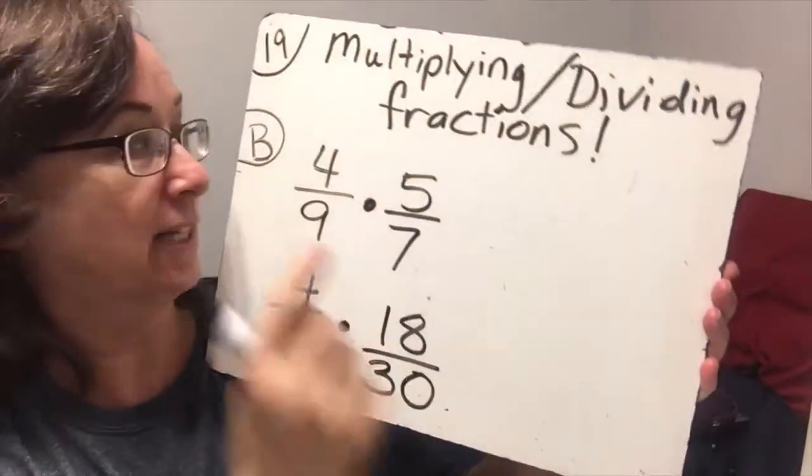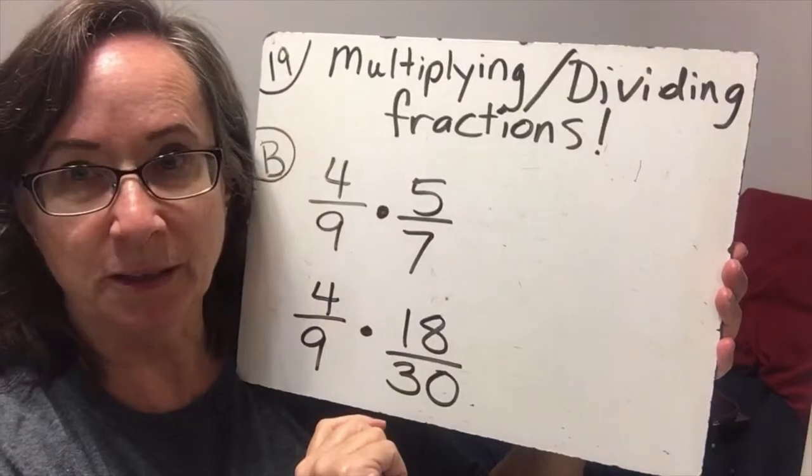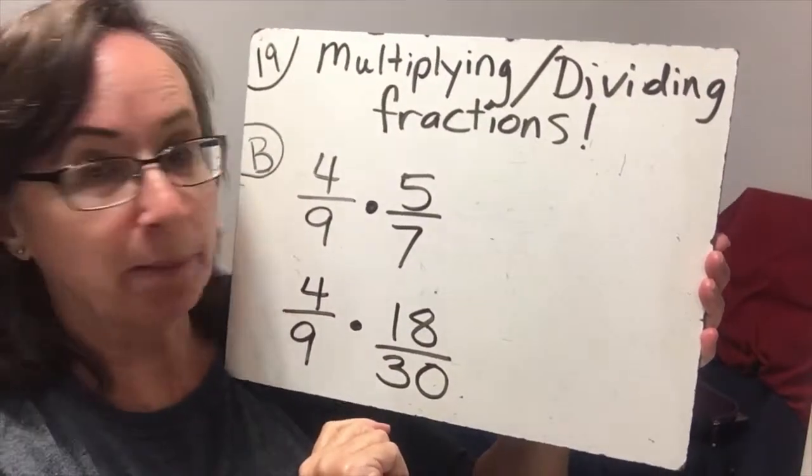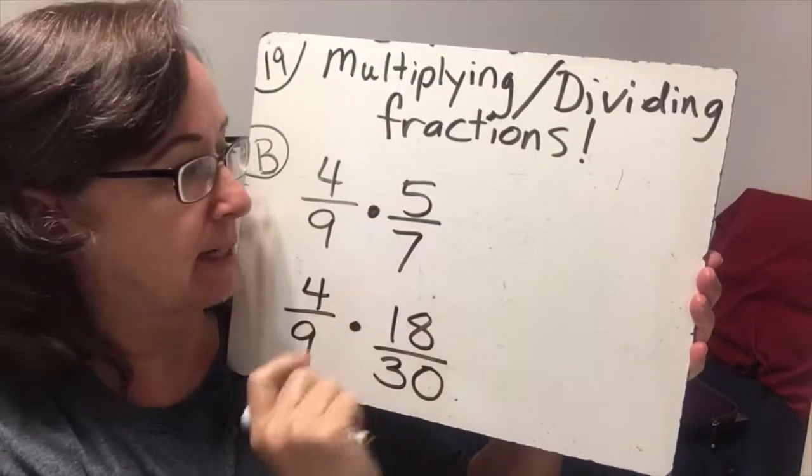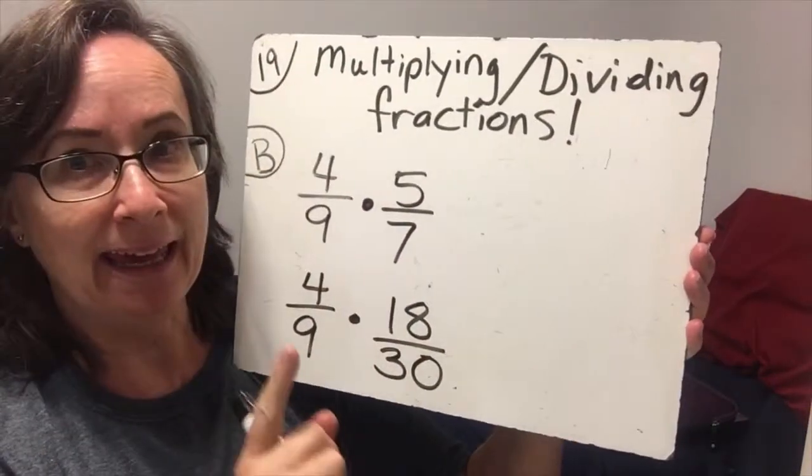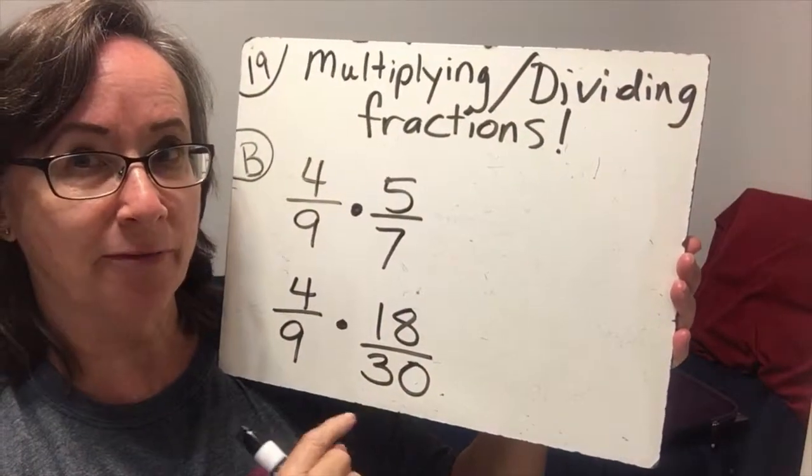So here in section B of lesson 19, we're going to multiply fractions. When we multiply fractions, we multiply straight across the numerators, and we multiply straight across the denominators.